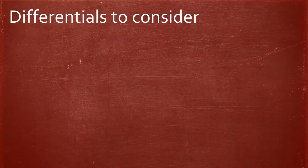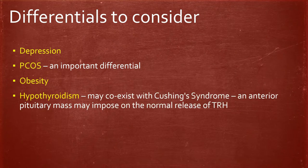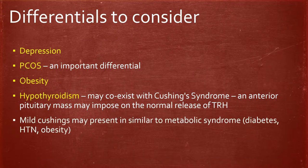The differentials of Cushing syndrome include depression, which may present with weight gain and mood changes similarly. Polycystic ovarian syndrome is an important differential — women often present with menstrual problems, increased body and facial hair, weight gain, and symptoms of diabetes mellitus; half of PCOS patients are clinically obese. Obesity, hypothyroidism, and mild Cushing's all have considerable overlap with metabolic syndrome.